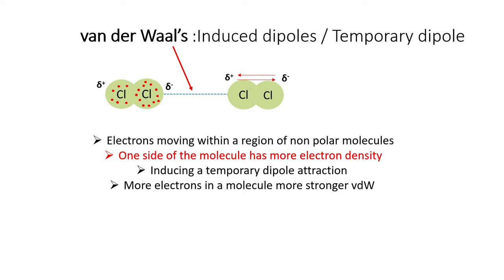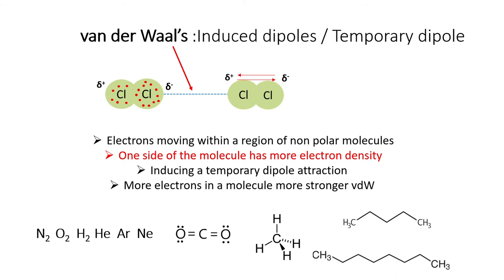Examples of molecules with Van der Waals forces are nitrogen, oxygen, hydrogen, monoatomic molecules such as helium, argon, and neon. Other examples are carbon dioxide and alkane groups such as methane and long-chain hydrocarbon groups. Most importantly, Van der Waals forces become stronger when the size of molecules becomes bigger, indicating higher electron density.